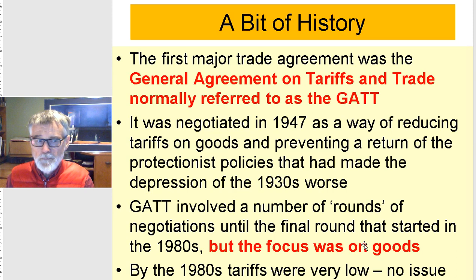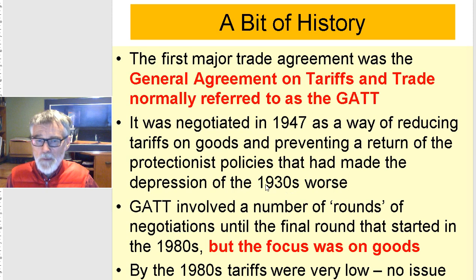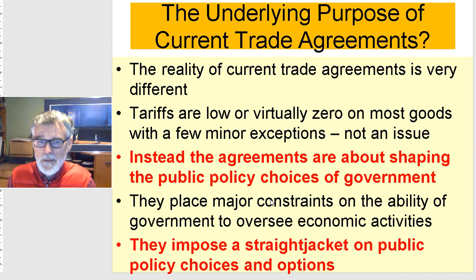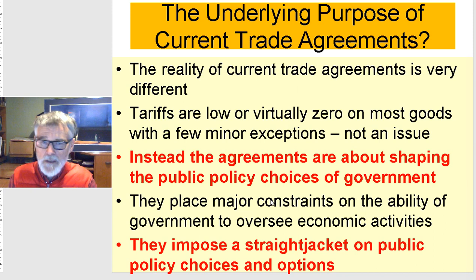The last GATT round was called the Uruguay Round, starting in the early 1980s. By that time GATT had been quite successful in lowering tariffs and other non-tariff restrictions on trade for most member countries. But the reality of trade agreements negotiated since the mid-1980s is really quite different. Tariffs had become very low — on many goods, zero — and for most industrialized countries, tariffs were not a major economic issue by the mid to late 1980s.